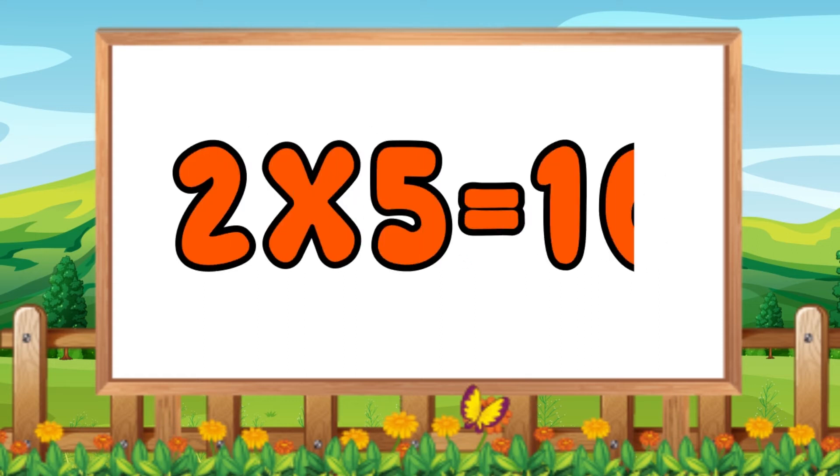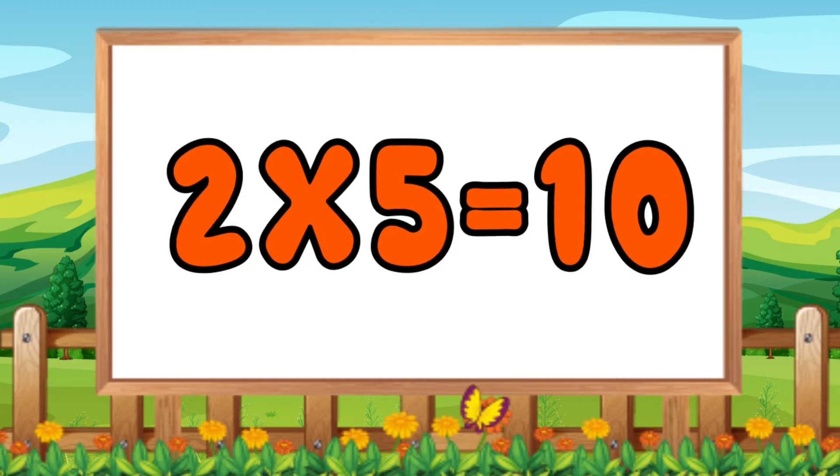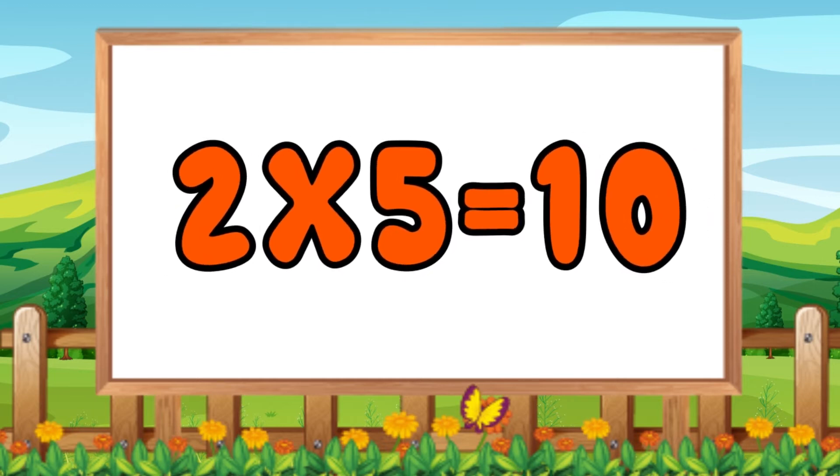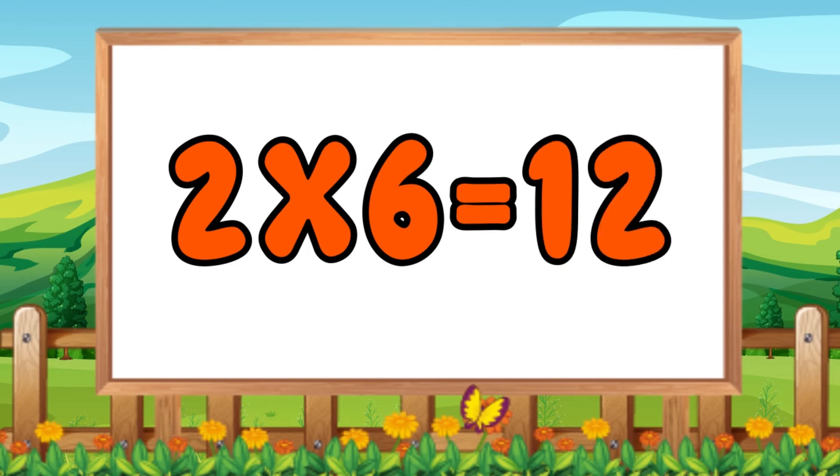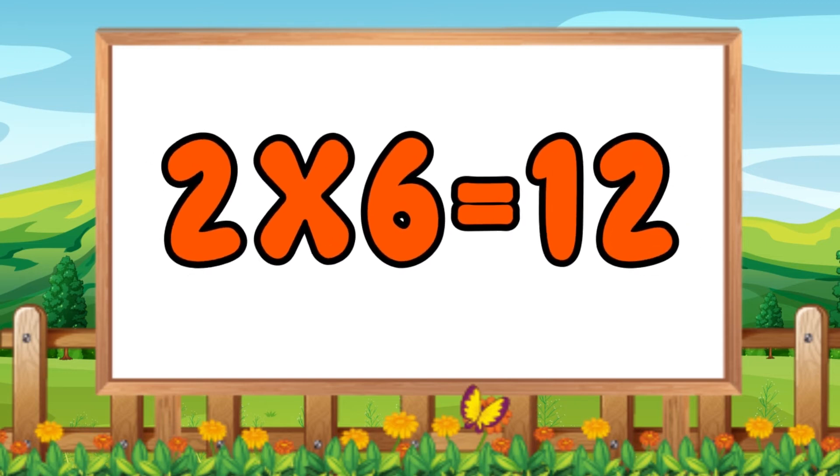Two fives are ten. Two sixes are twelve, two sixes are twelve.